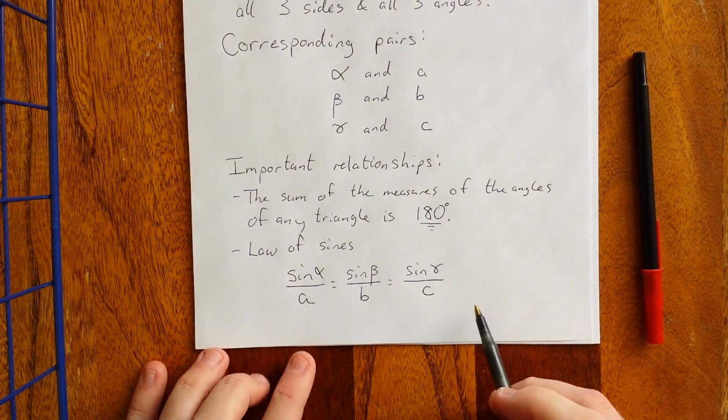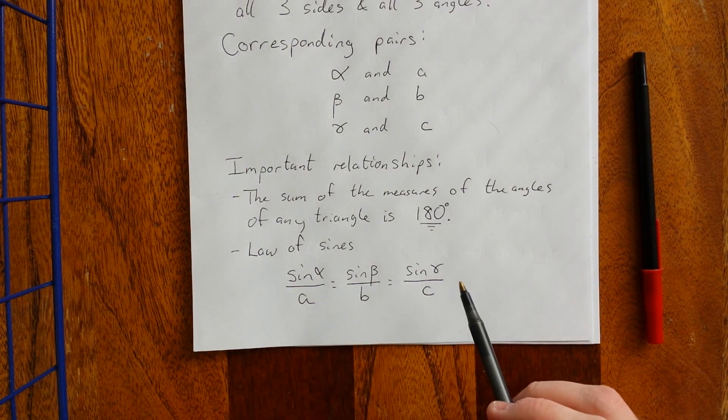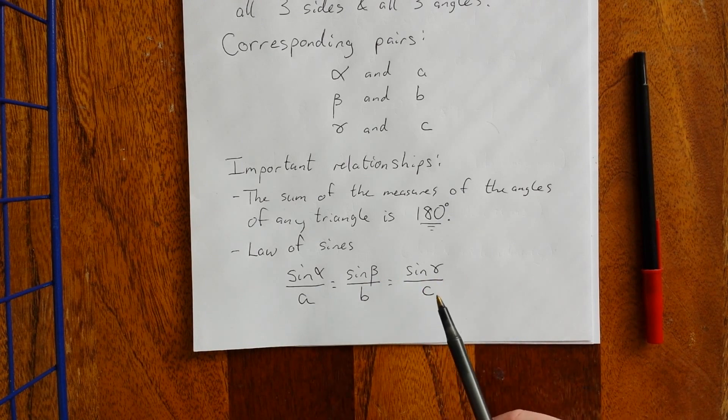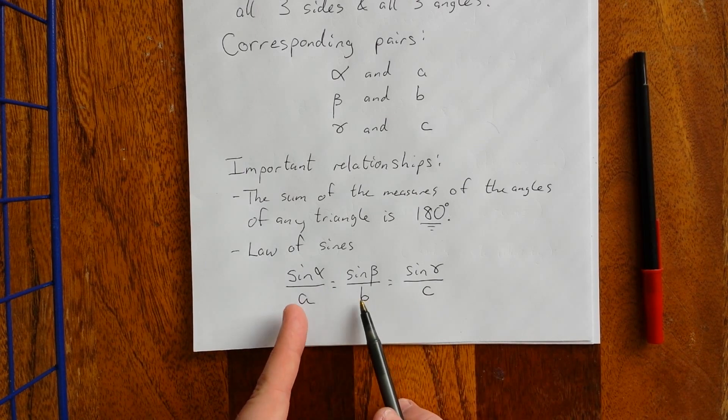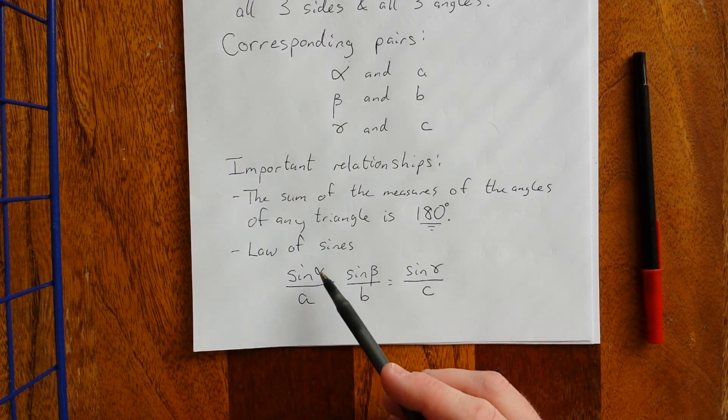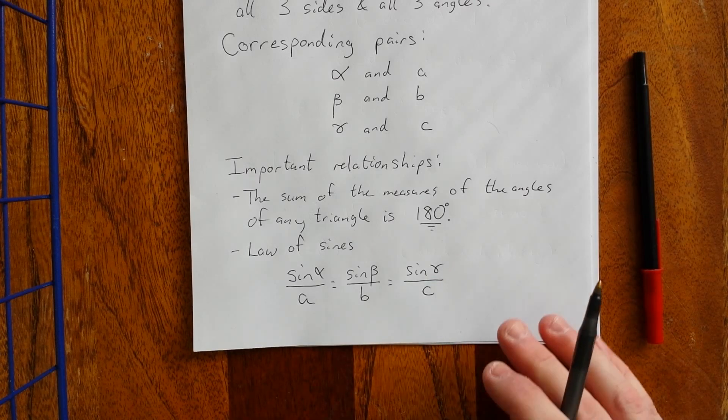If you're interested in seeing the proof of the law of sines, please feel free to get in contact with me via the comments section of this video. The law of sines is going to be a really important identity to have as long as we have a corresponding angle-side pair. You'll notice that alpha goes with A, beta goes with B, and gamma goes with C. Really important relationship.